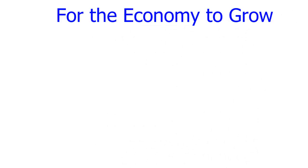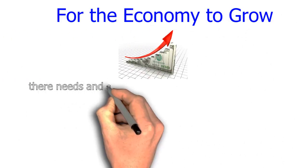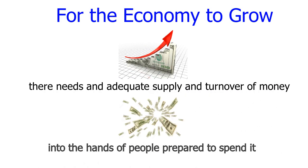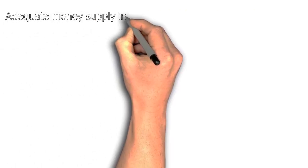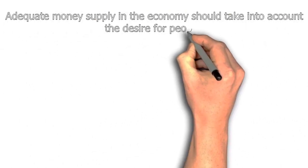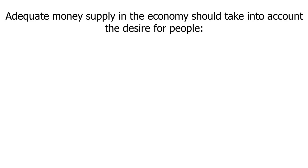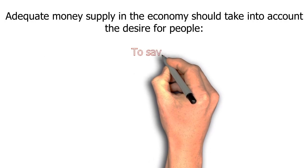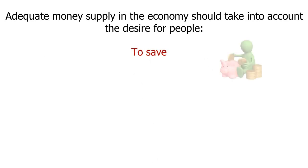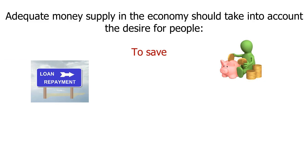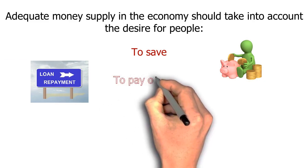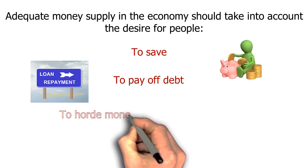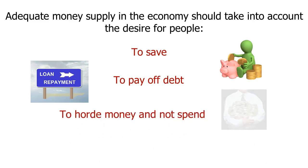To be able to buy and sell things and help the economy grow, there needs to be an adequate supply and turnover of money into the hands of people who are prepared to spend it. The amount of money supply in a country to foster productive growth should also take into account the natural desire for people to save, the need to pay off private debts such as house mortgages, credit cards and student loans, and money being concentrated in the hands of a wealthy few who hoard rather than spending it back into the economy.